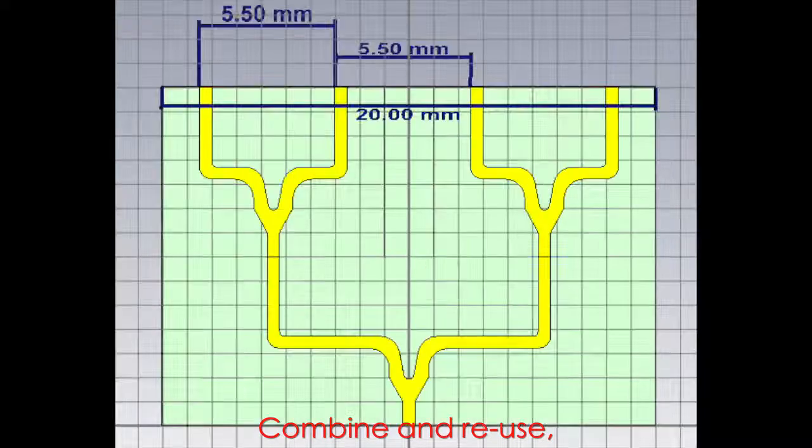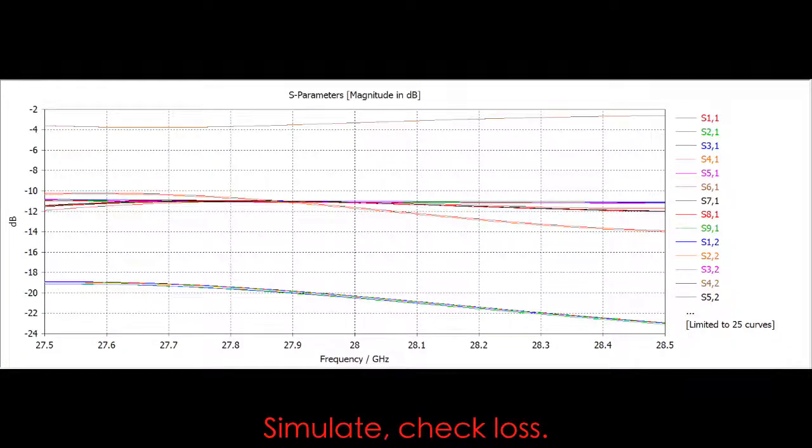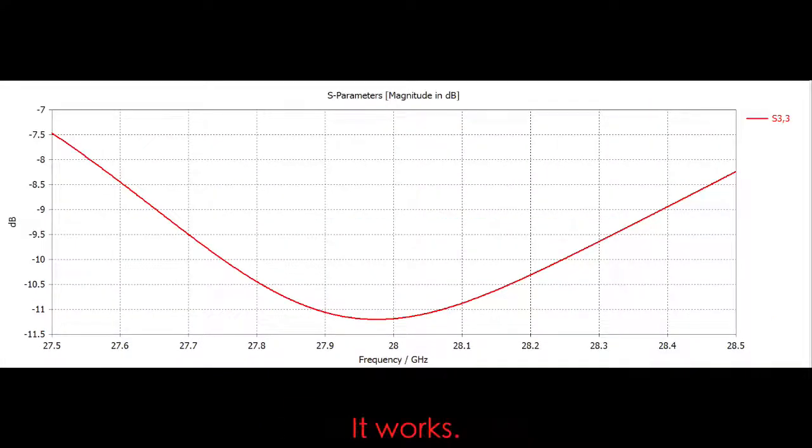Combine and reuse. You get a 1 to 8 T-junction splitter. Simulate, check loss, optimize. It works.